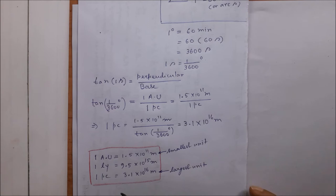A comparison shows that one astronomical unit is the smallest distance while one parsec is the largest among these distance units.